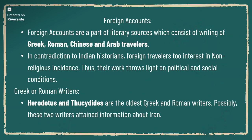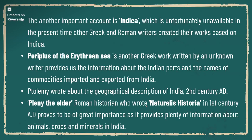The next category is foreign accounts. Foreign accounts are important because they give actual accounts about Indian cities, economic, social, and political lifestyle in the ancient period. The most important contributors are Greek, Roman, Chinese, and Arab travellers. Greek and Roman writers include Herodotus — known as the father of history — and Thucydides. Another important account is Indica by Megasthenes, who classified Indian society into seven sections.